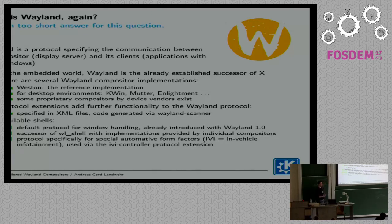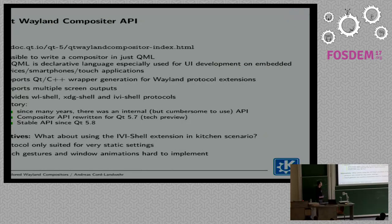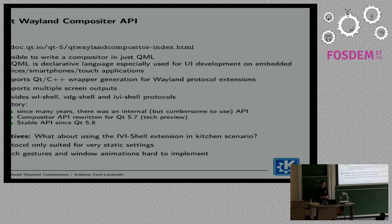The IVI shell has the goal that it's interchangeable — you can take any compositor that speaks IVI shell and exchange it. However, that is really limited in what you can do there. So I looked at the Qt Wayland Compositor framework. With this framework, it's a declarative language that looks a little bit like JSON, where you say what you want to have. Like, I want to have a rectangle, then you have a rectangle. You can now do the same with the Qt Wayland Compositor framework — you can say I want to have a compositor, I want to have an output, I want to put my window somewhere in the output, and everything works nicely together.